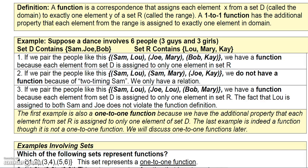What is a function? By definition, it's a correspondence that assigns each element X from a set D, called the domain, to exactly one element Y of a set R, called the range. It's actually a one-to-one function if it has the additional property that each element from the range is assigned to exactly one element in the domain.